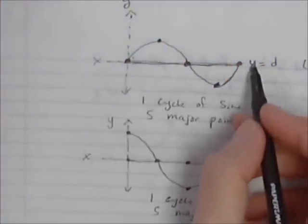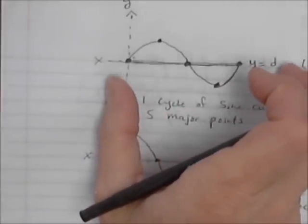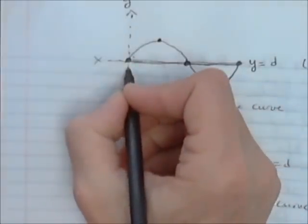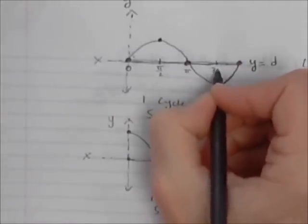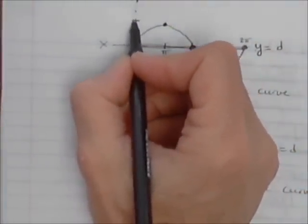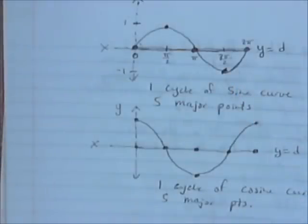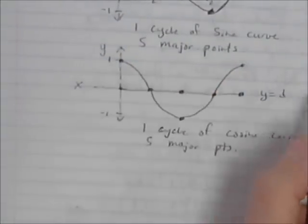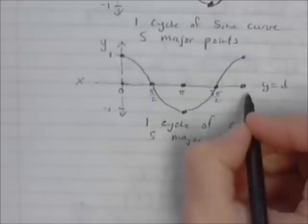As far as the x-values go, if b is equal to 1 — meaning no horizontal shrink or stretch — the major points on our sine curve are 0, π/2, π, 3π/2, and 2π. If the amplitude is equal to 1, the sine curve goes up to 1 on the y-axis and down to negative 1 as the minimum. Those same x-values apply to the cosine curve: 0, π/2, π, 3π/2, and 2π, going up to 1 and down to negative 1.